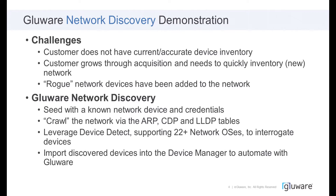Quite a few of our customers grow through acquisition, so when they acquire a new company they need to quickly assess what hardware they have — does equipment need to be replaced, does the OS need upgrading, are there new configuration standards to apply? Many organizations also deal with rogue network devices added out of process. Glueware's new discovery feature enables you to seed it with a known network device and one or more credentials. Glueware will then crawl the network leveraging ARP, Cisco Discovery Protocol, and Link Layer Discovery Protocol tables to discover IP addresses, interrogate devices using its device detect library — now at 23 operating systems — and import them into Device Manager.